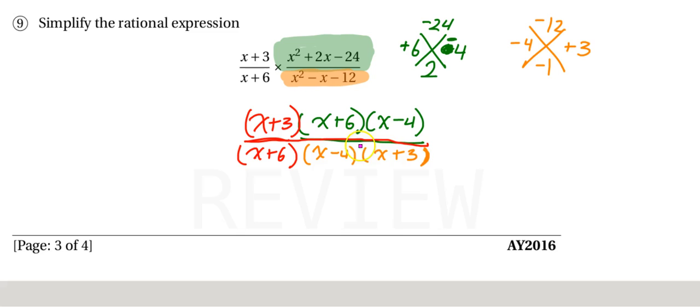Taking a look, this x plus 3 and this x plus 3 can cancel out. This x plus 6 and this x plus 6 can cancel out. And this x minus 4 and this x minus 4 can cancel out. Everything has canceled out. That means that for my final answer, I can say that when everything crosses out, it's not 0 when it's division, it's 1. And so my final answer is 1.